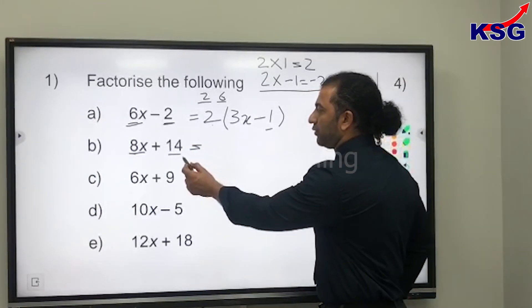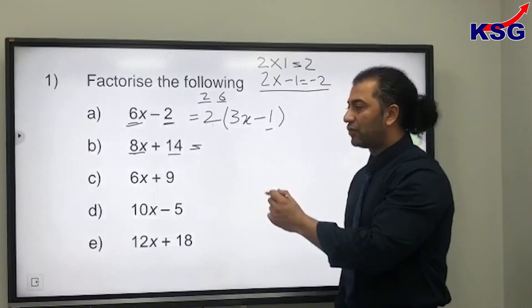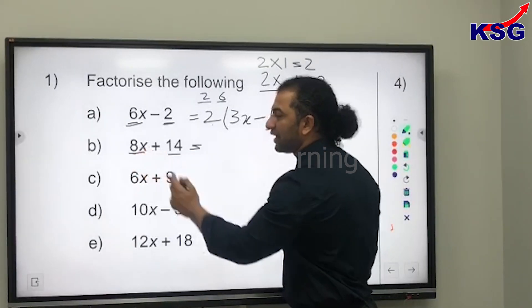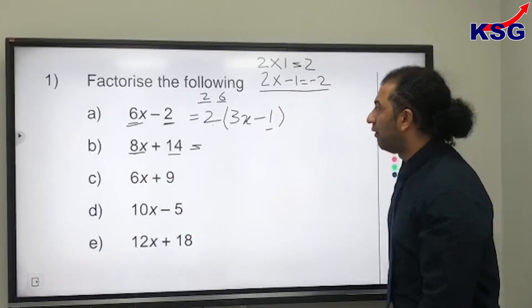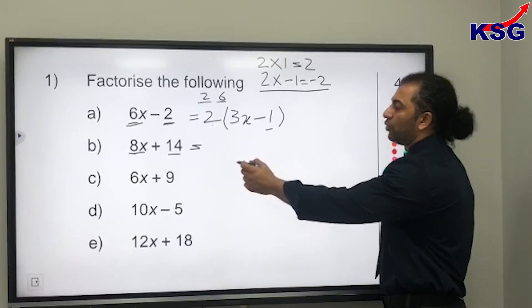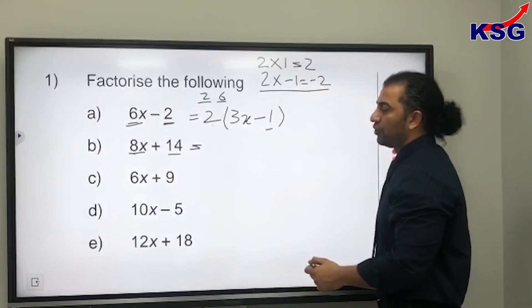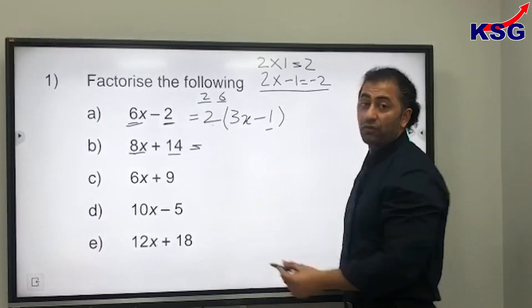First step: we need to find out what is the biggest number that goes to both 14 and 8. We can see both are even numbers, so 2 is the biggest number which goes to both 14 and 8.